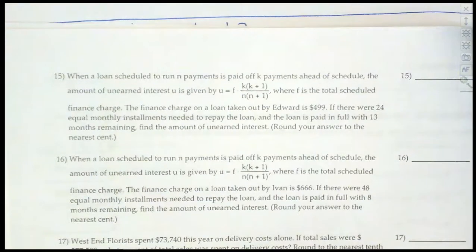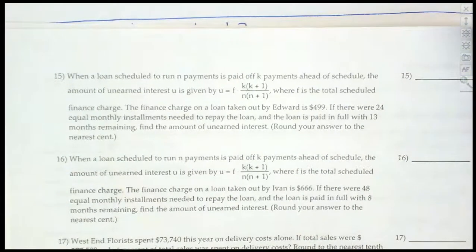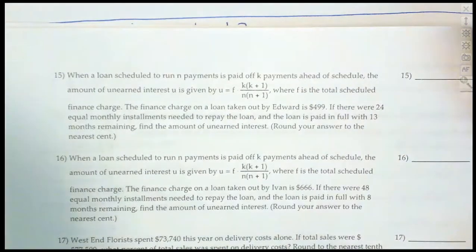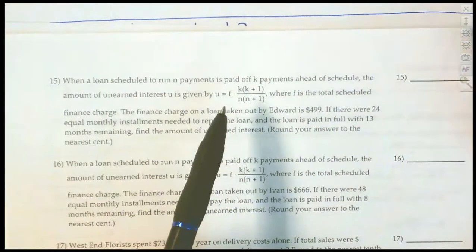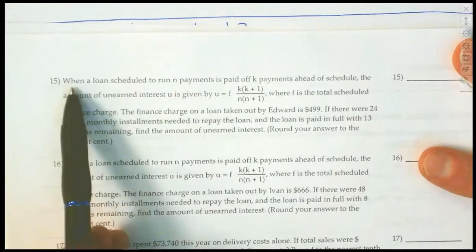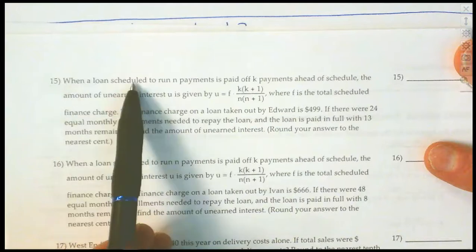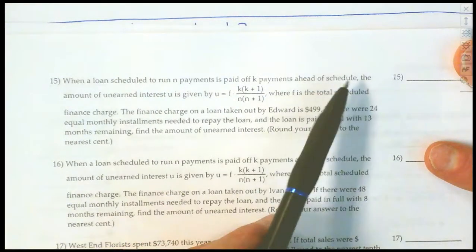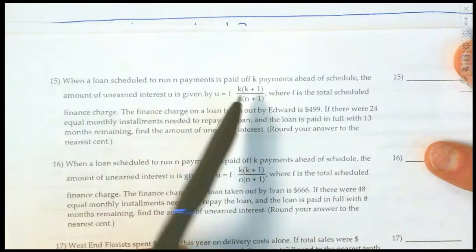This question tells us how much money we save when we pay off a loan early. If you have a car loan for five years and pay it off in a year and a half, you've saved money on interest. This formula gives us an approximate value of how much money we'd save by paying that car off early. The formula is for unearned interest — how much money you save — where F is the total scheduled finance charge.